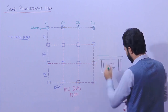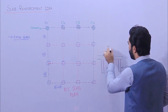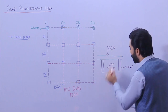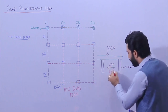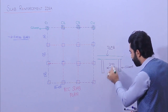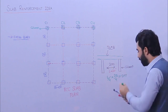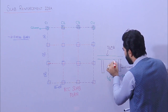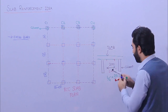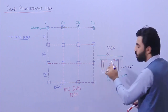This is the slab, this is a column, this is also a column. Here this is one support and this is the other support. At the distance of L/4 — where L is the total span of 20 feet — so L divided by 4 means 20 divided by 4, which gives us 5 feet. So at a distance of 5 feet from each support, we have negative bending moment. So this is L/4 = 5 feet on this side, and also 5 feet on the other side.